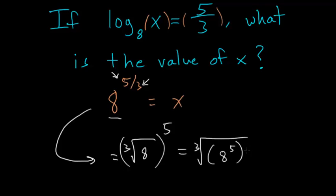Either way, you'll get the same answer. But in our case, let's take the cubed root of 8 first, since we know that that's just 2, and then we can raise that to the 5th power. And 2 to the 5th power is equal to 32.